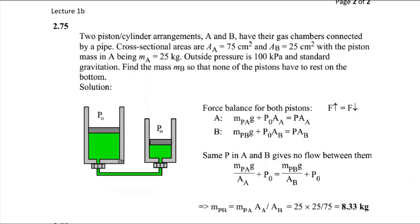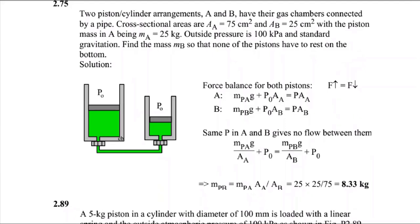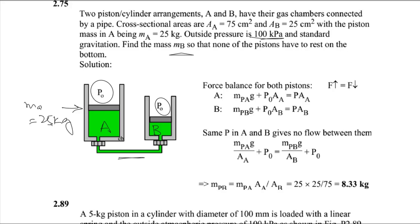Moving to another question: we have a two-piston-and-cylinder arrangement with a gas chamber connected by a pipe. The cross-section area of cylinder A is 75 square centimeters and cylinder B is 25 square centimeters. The piston mass of A is 25 kg, outside atmospheric pressure is 100 kPa acting on both pistons, and standard gravitational acceleration is g. Find the mass of piston B such that neither piston rests on the bottom.